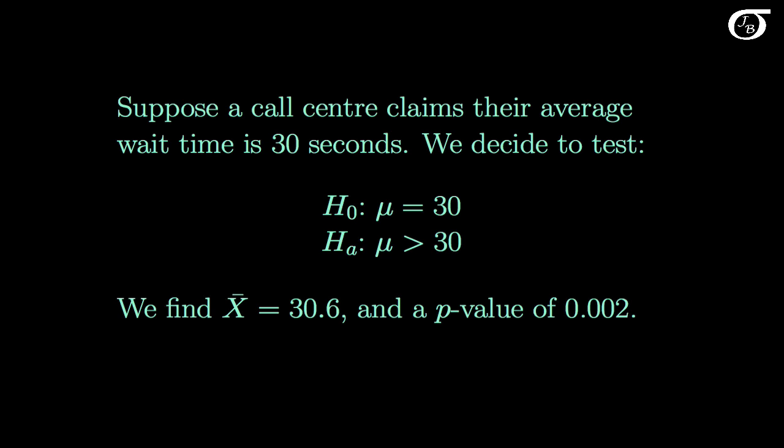We go ahead, get a sample, find a sample mean of 30.6 seconds, and carry out a test and get a resulting p-value of 0.002.